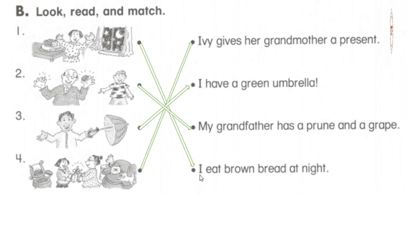Practice with teacher. I eat brown bread at night. I eat brown bread at night. Number 2, my grandfather has a prune and a grape. Again, my grandfather has a prune and a grape. Number 3, I have a green umbrella. And number 4, Ivy gives her grandmother a present. Ok.